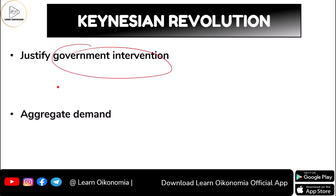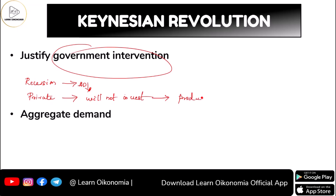Keynes always favored government intervention. During times of recession or depression, aggregate demand is low — that is the main cause. We want aggregate demand to increase, but private entities will not invest. Since they will not invest, production comes down; since production falls, employment comes down; and when employment comes down, income falls, and if people have no income, their demand also comes down. This is what happened during the Great Depression.